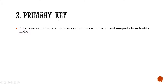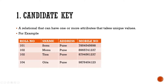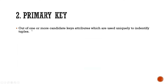Now the next concept is primary key. We know that with candidate key, role number and mobile number are the two unique values. What is primary key? Out of one or more candidate keys, the attribute which can uniquely identify the records — which can uniquely identify the tuples — can be called the primary key.